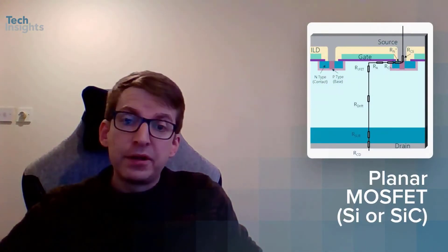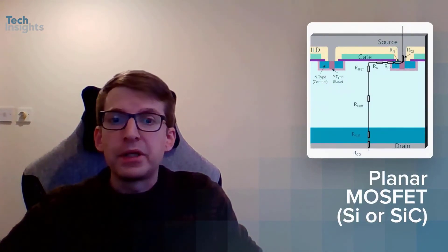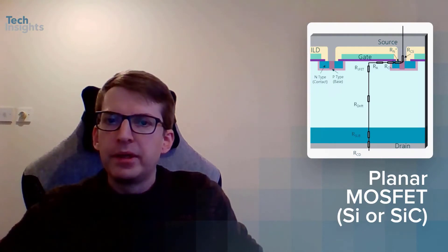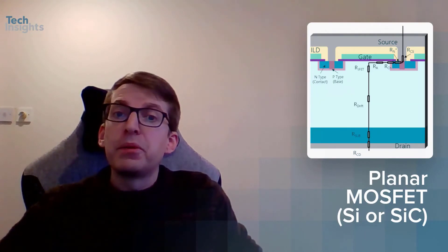For a silicon or silicon carbide MOSFET, the structure is essentially the same. However, silicon IGBTs are non-linear from turn-on due to the collector diode, so we don't want to discuss them in terms of RDS-ON. Rather, we use a figure known as VCE-SAT.